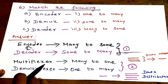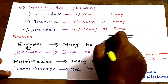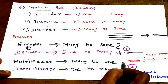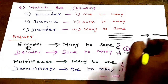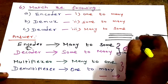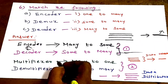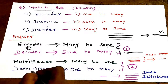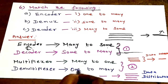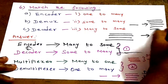Multiplexer and Demultiplexer are also opposites. Multiplexer is many-to-one — it combines many inputs into one output, acting as a data selector. Demultiplexer is one-to-many — it distributes one input to many outputs, acting as a data distributor.